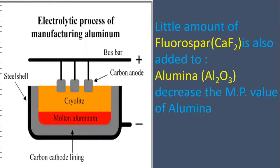Moreover, a little amount of fluorspar is added. What is the formula of fluorspar? CaF2. This decreases the melting point of alumina.